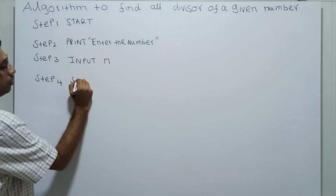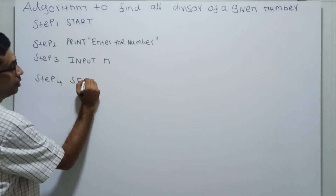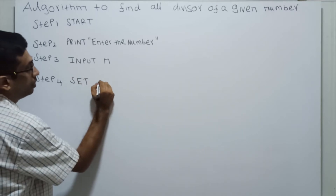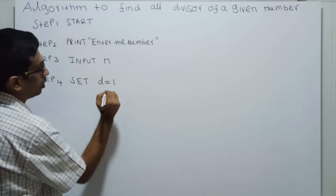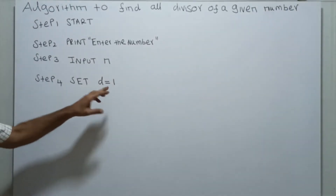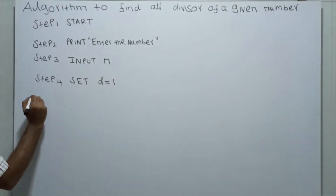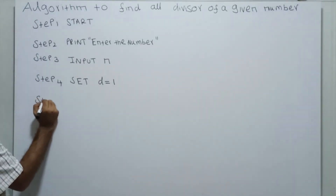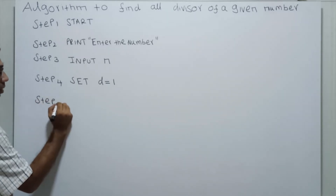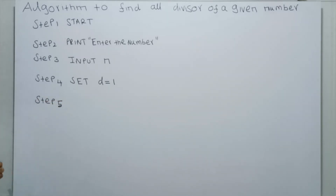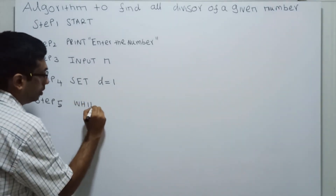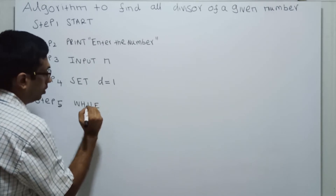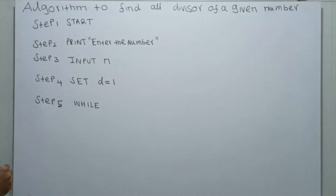Step 4: Set D equal to 1. Step 5: I am writing a while loop — While.